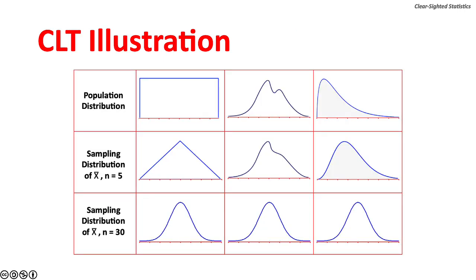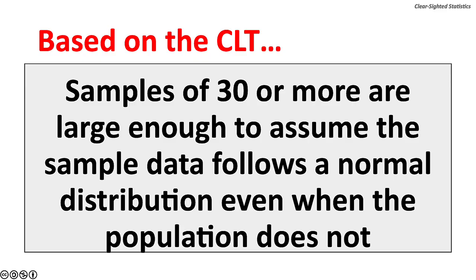These charts illustrate the implications of the central limit theorem. Based on the central limit theorem, samples of 30 or more are large enough to assume the sampling distribution follows a normal distribution even when the population does not. Now,